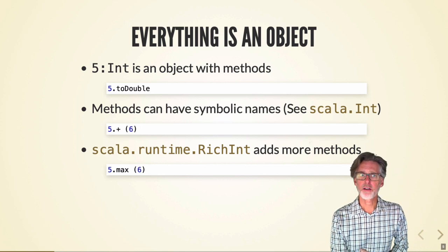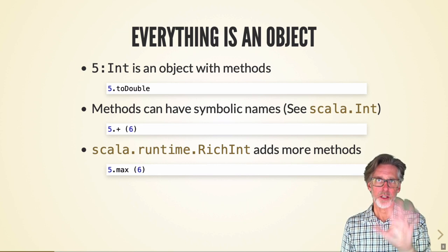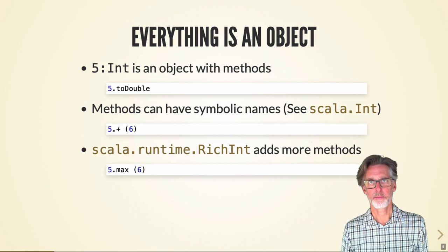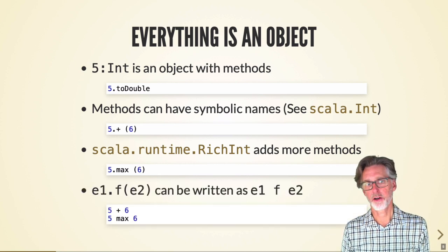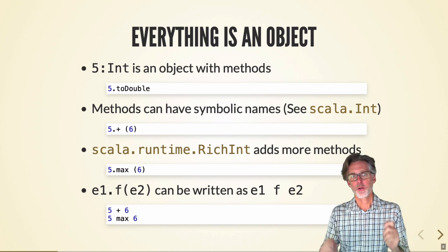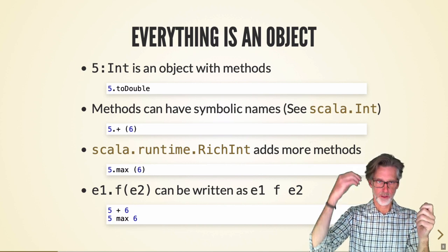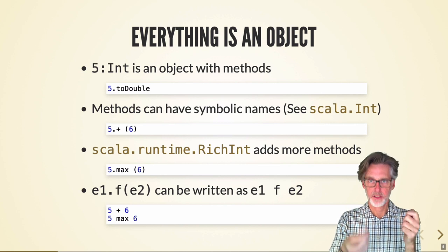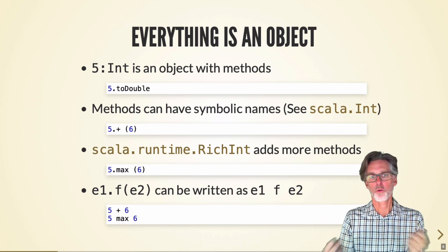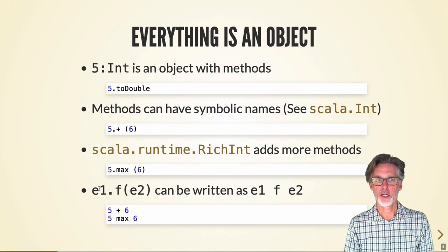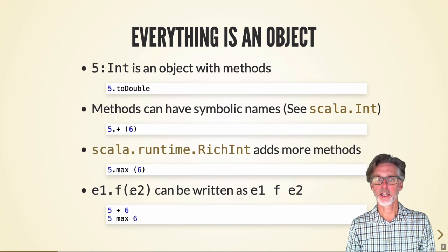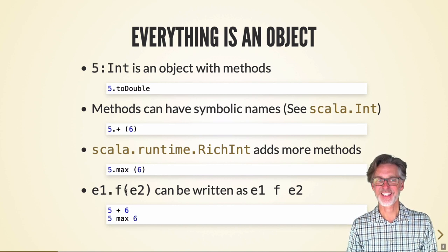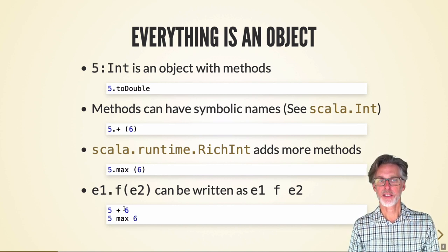A beautiful thing in the language is that there is really no distinction between a method and a binary operator. Any time you have an expression with a method that takes only one argument, you can write that expression without putting the dot and the parentheses. So 5 plus 6 is the same as 5.+(6).